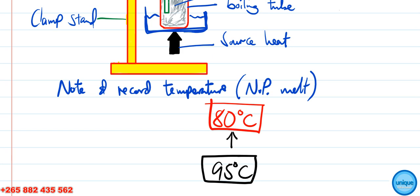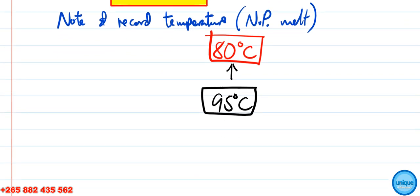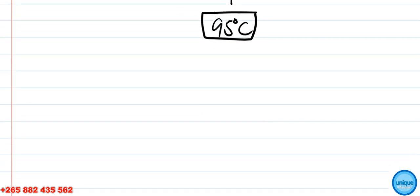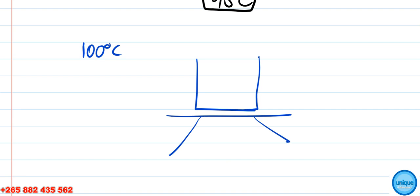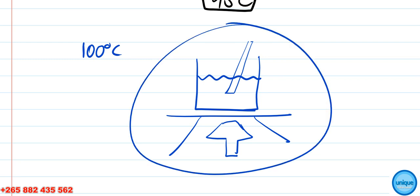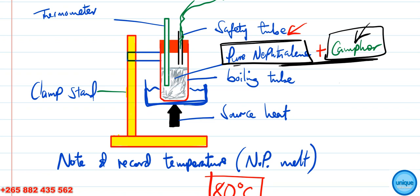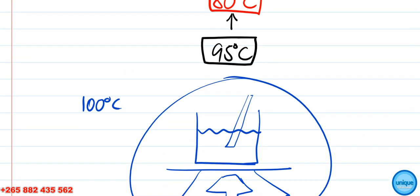You can also determine the purity of a substance using boiling point. For this you need water. The boiling point of pure water is 100 degrees Celsius. In your beaker, add the water with a source of heat and a thermometer.